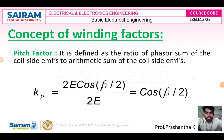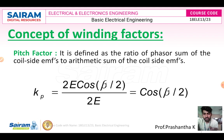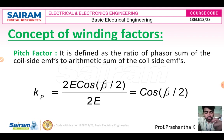The pitch factor is defined as the phasor sum of coil side EMFs divided by the arithmetic sum of coil side EMFs. The formula is 2E·cos(β/2) divided by 2E, giving cos(β/2). Pitch factor is also the ratio of short-pitched winding EMF to full-pitched winding EMF. Due to short pitching, less copper is used but the induced EMF is reduced — this reduction is captured by the pitch factor.